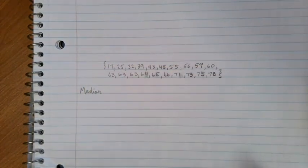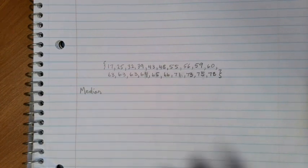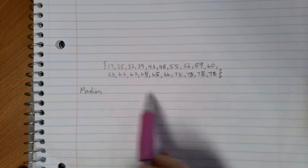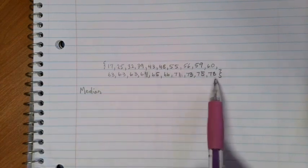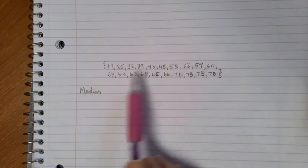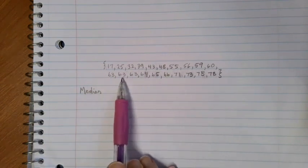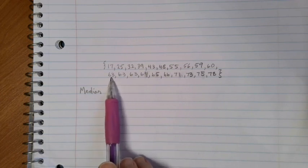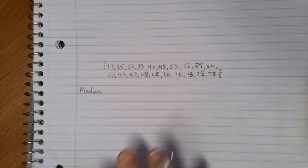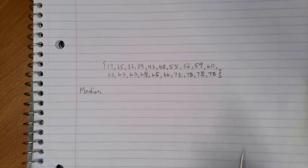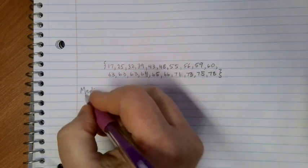Now if we want to know what value lies in the middle, the first thing that we have to do is order the list. Here what I've done is I've gone through and rewritten those 20 numbers in order from the smallest value to the biggest value. Notice that my list does include repeated values. For example, 63 showed up three different times, so we had 63-year-old winners during several years over that period.